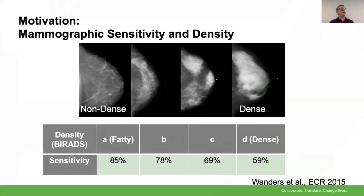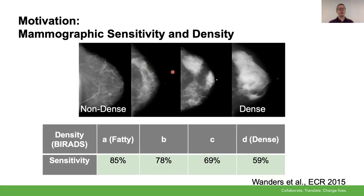What we're interested in in our group is looking at what we refer to as masking risk. Masking risk is really talking about screening mammography and the fact that we recognize that breast density, which is shown here, actually reduces the detectability of the lesions that are in the breast.